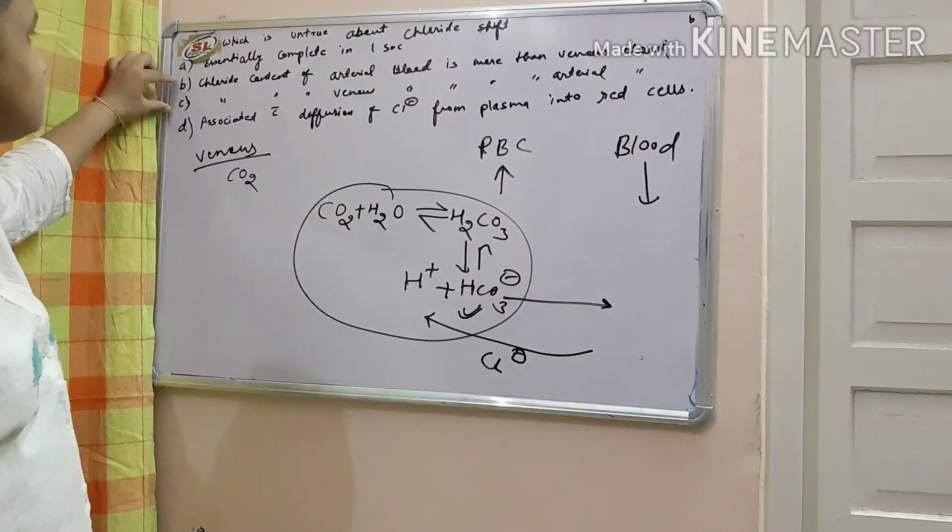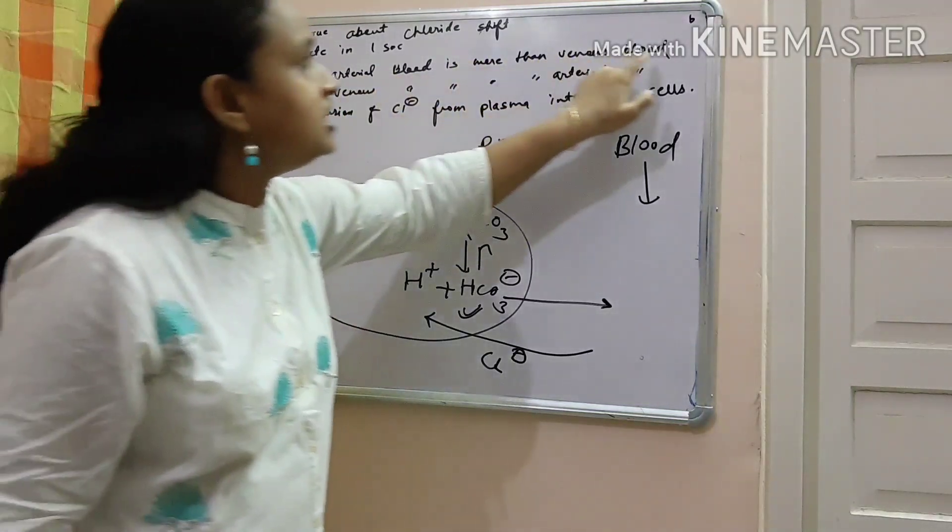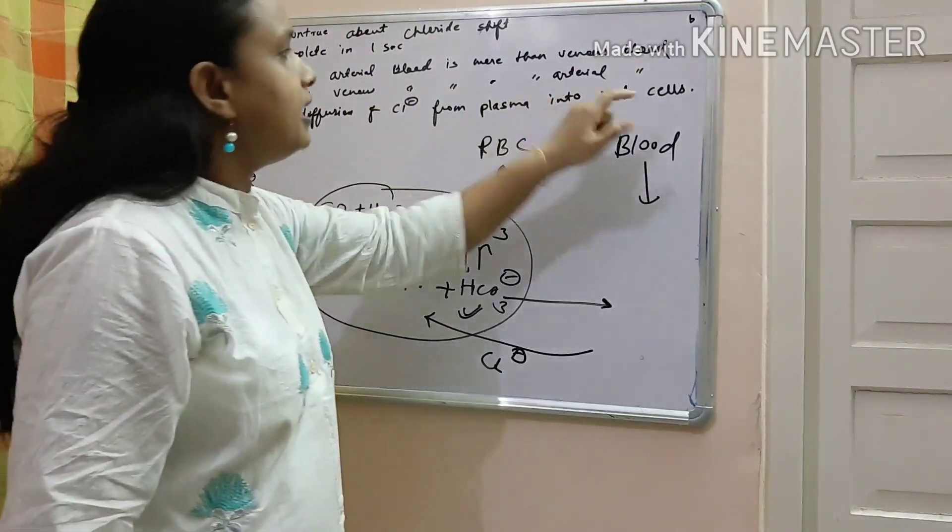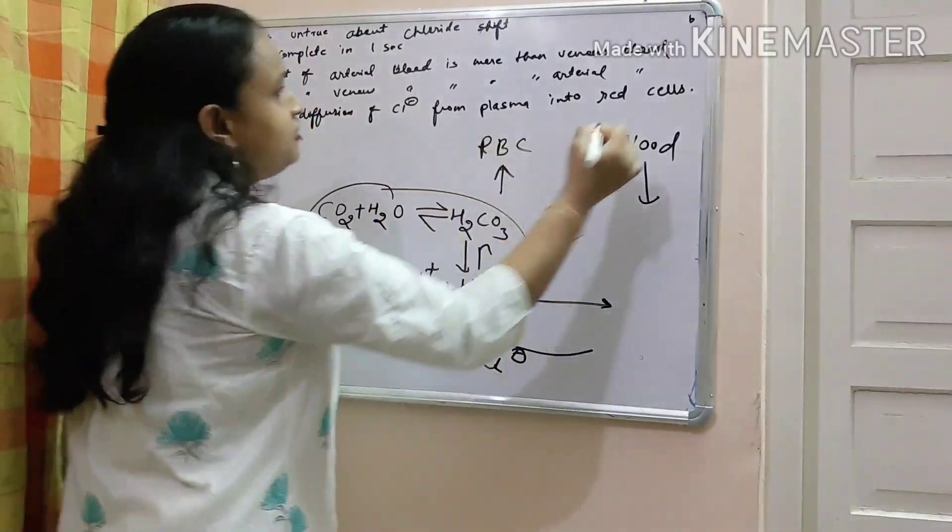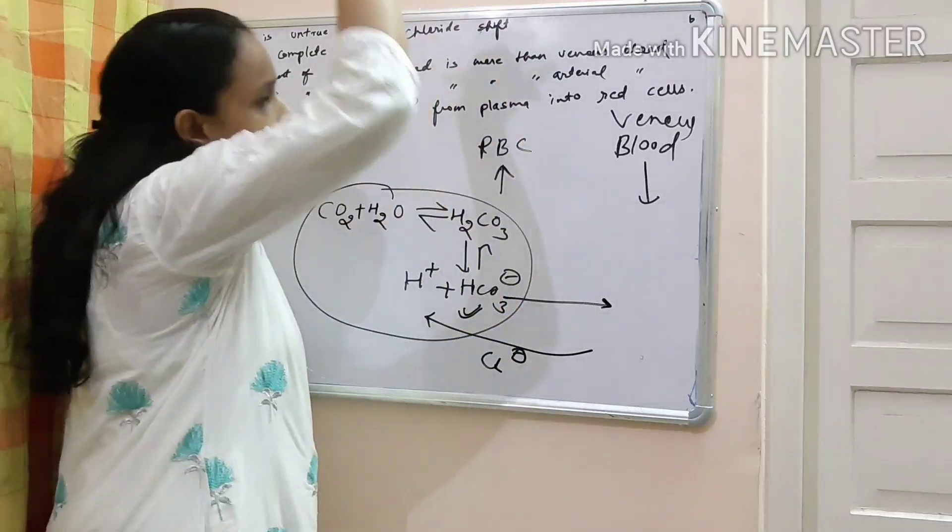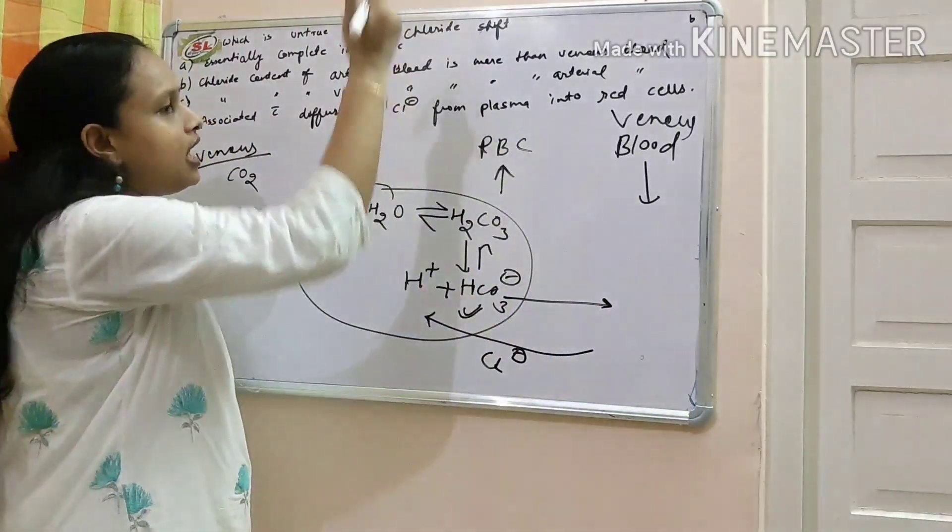We can compare this B and C option. Chloride content of arterial blood is more than venous blood. Chloride content of venous blood is more than arterial blood. So in this reaction, we are watching that in venous blood, concentration of chloride is going down. And in RBC, chloride is going up.